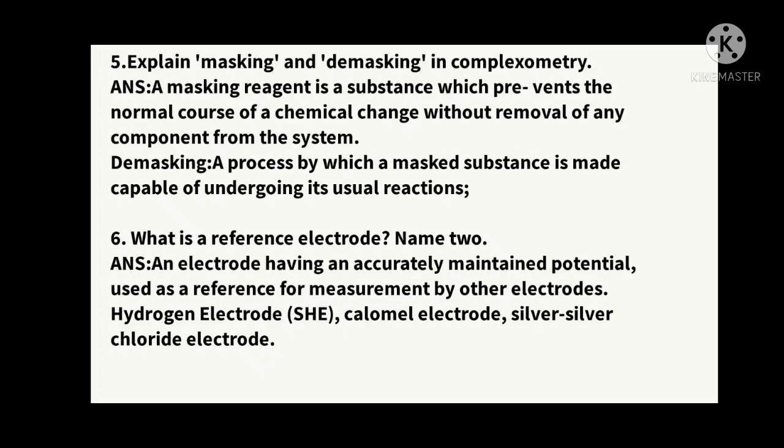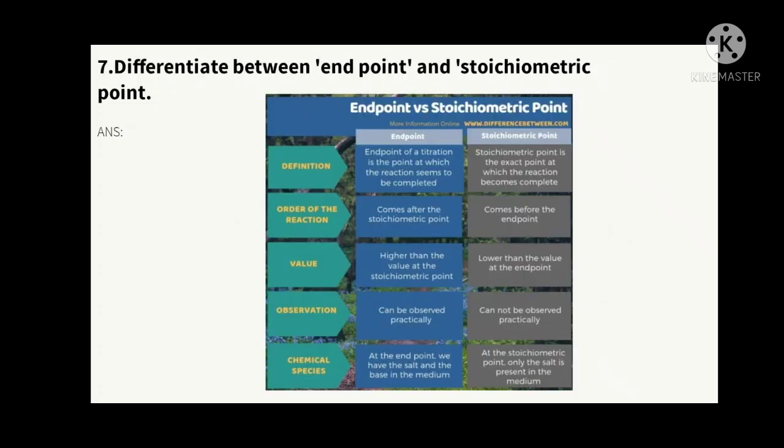Sixth question: what is a reference electrode? Name any two. A reference electrode is an electrode having an accurately maintained potential, used as a reference for measurement by other electrodes — like the hydrogen electrode, calomel electrode, and silver-silver chloride electrode.